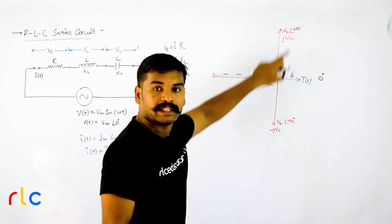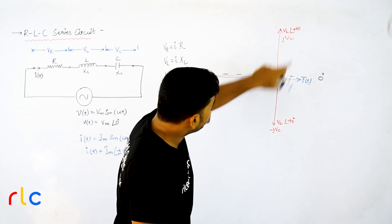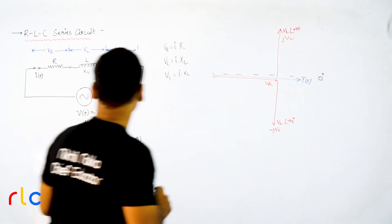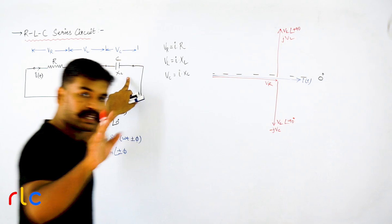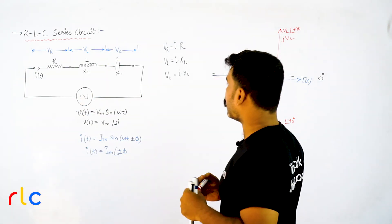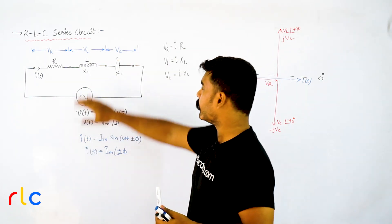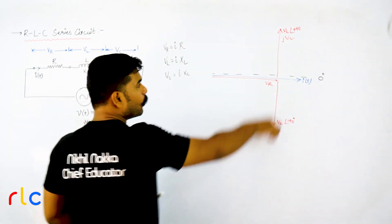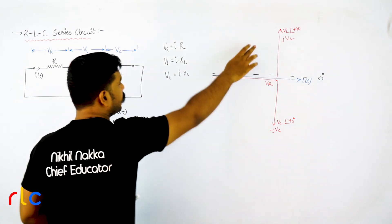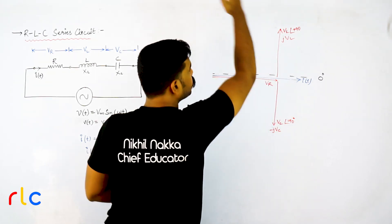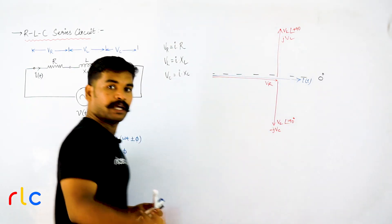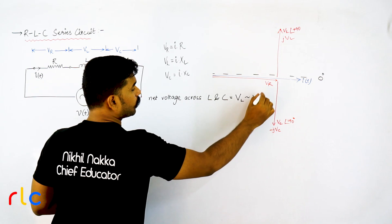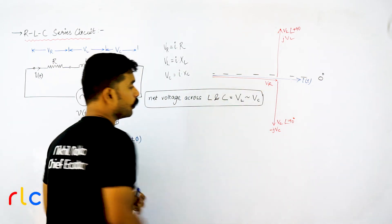Both VL and VC are imaginary quantities — one is +j and the other is −j, meaning they are in phase opposition. So the net voltage across inductor and capacitor will be the difference: VL − VC. Whichever is greater will dominate. This is also a common exam question in PSU and SSE-based examinations.